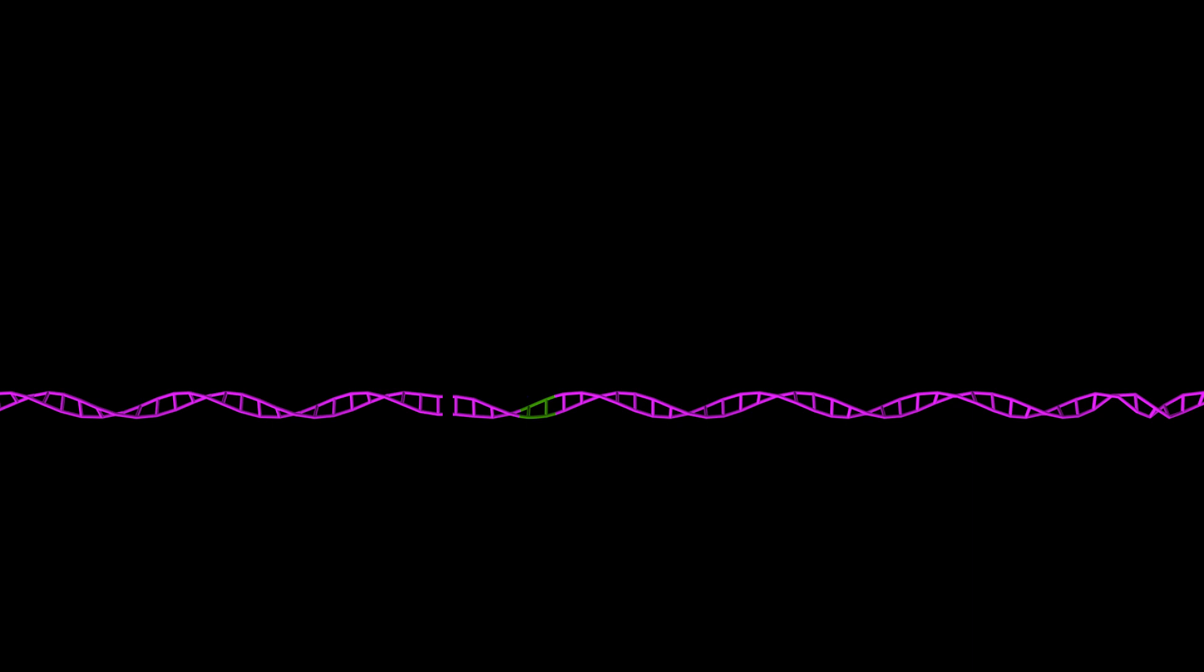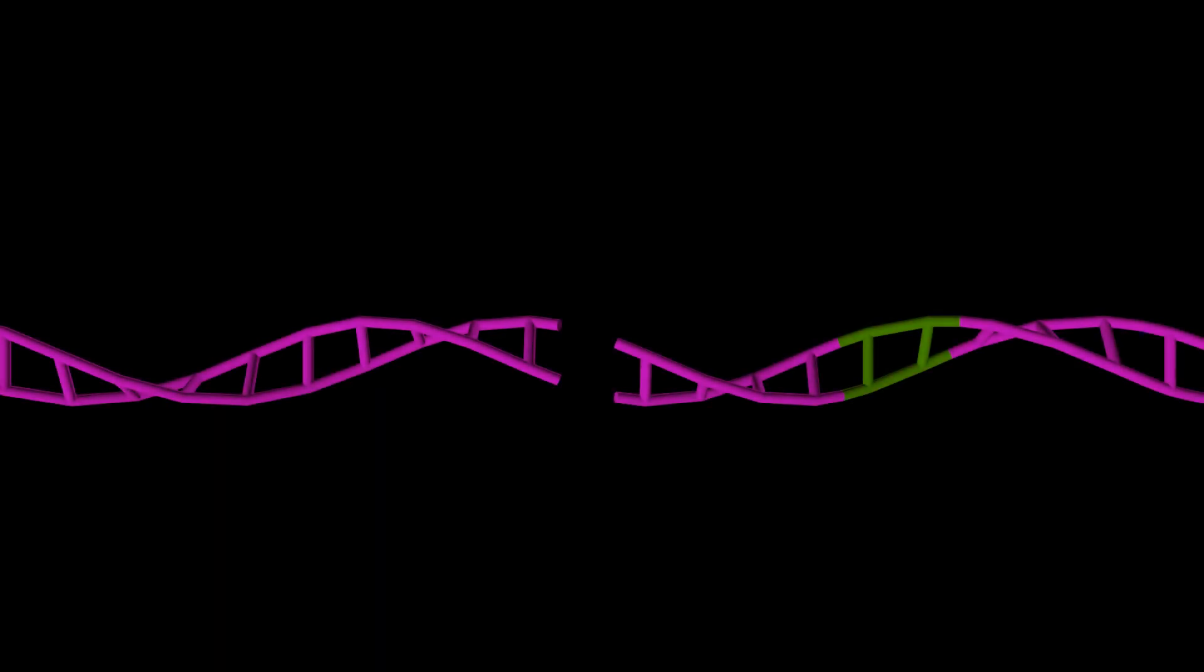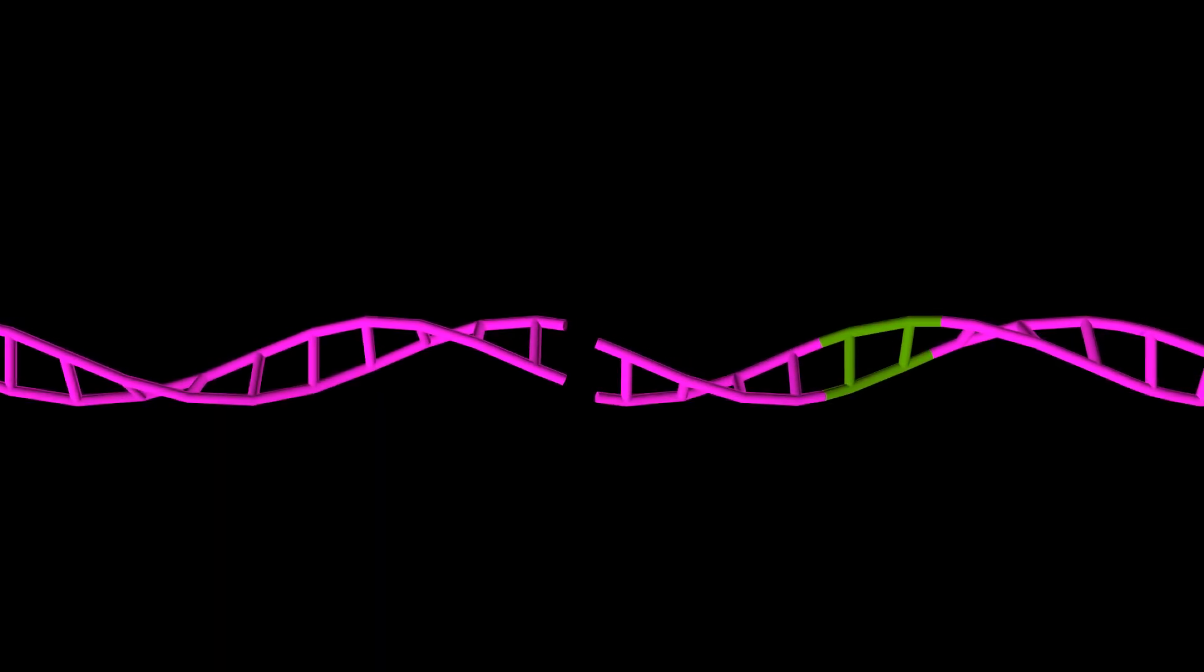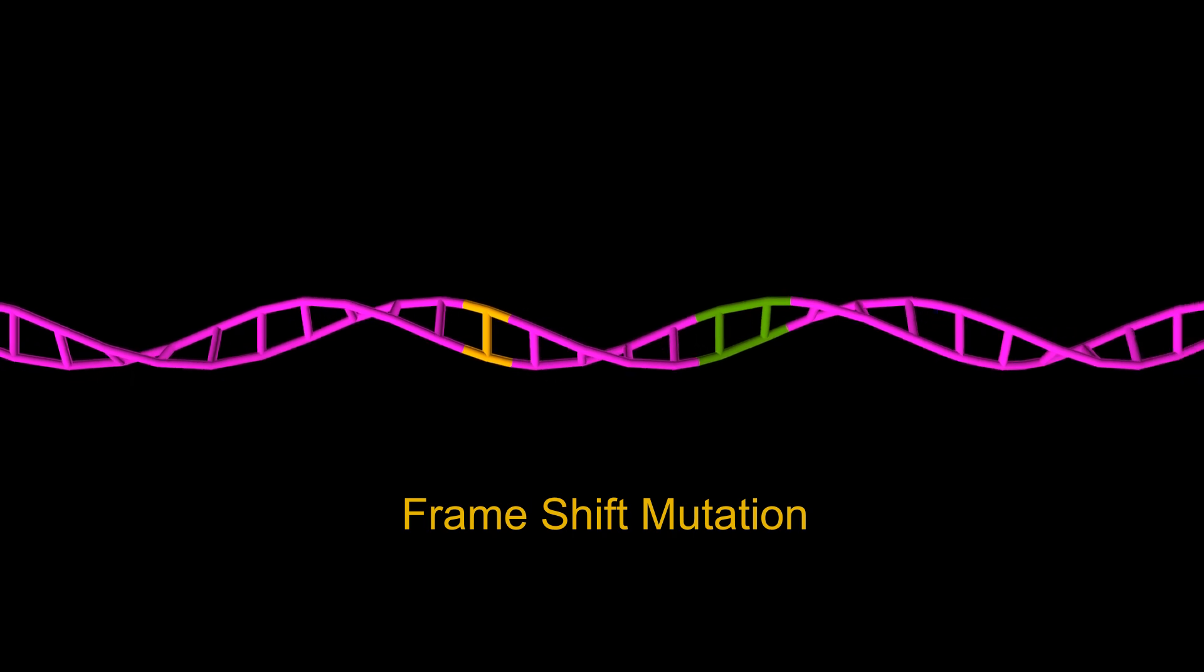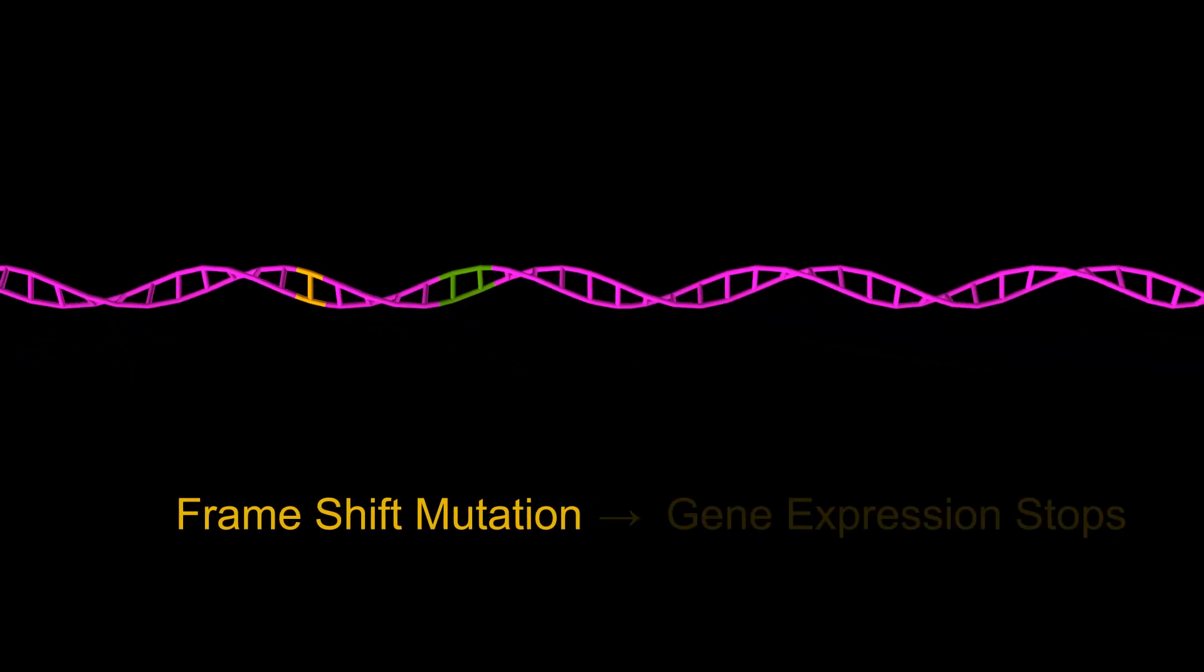In order to repair the damage, the cell will then do one of two things. First, it can directly stick the ends together, often creating mutations at the site of the break. This allows scientists to use Cas9 to disrupt any gene.